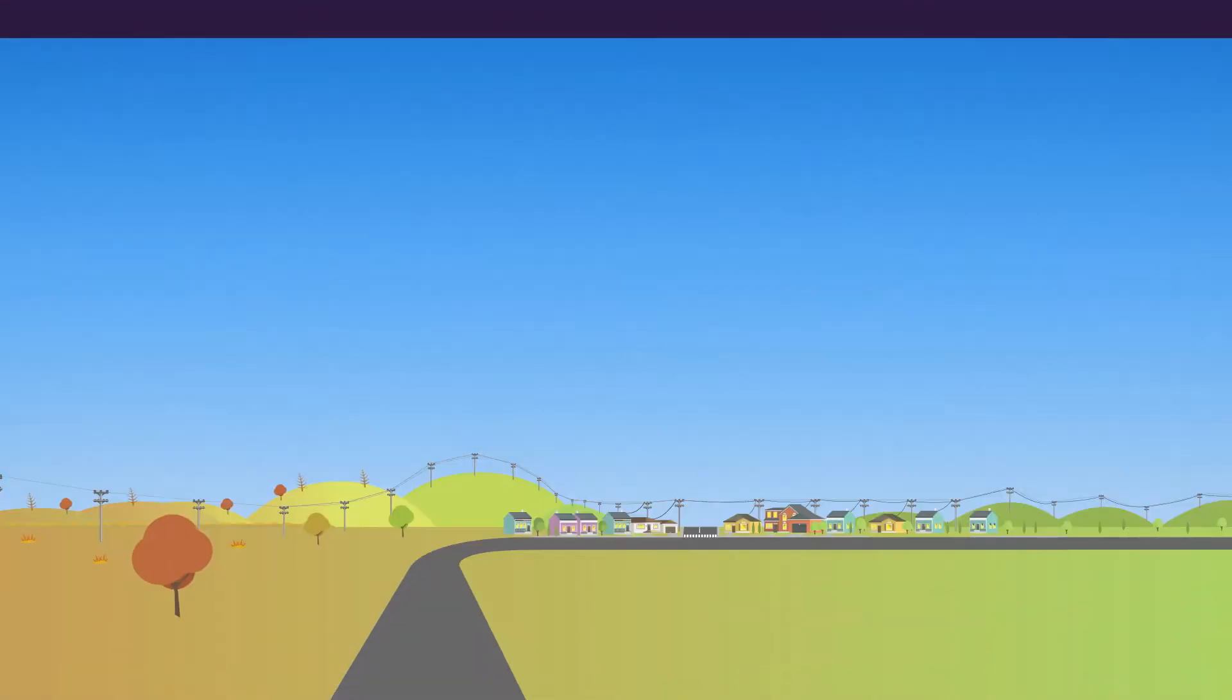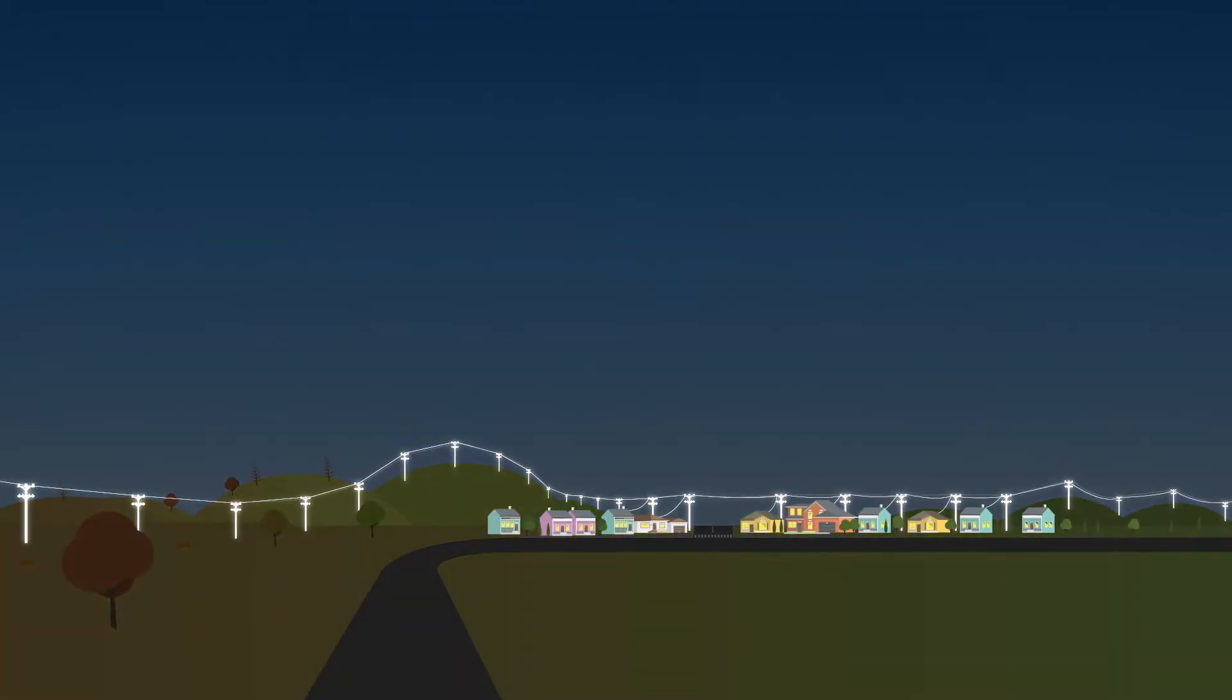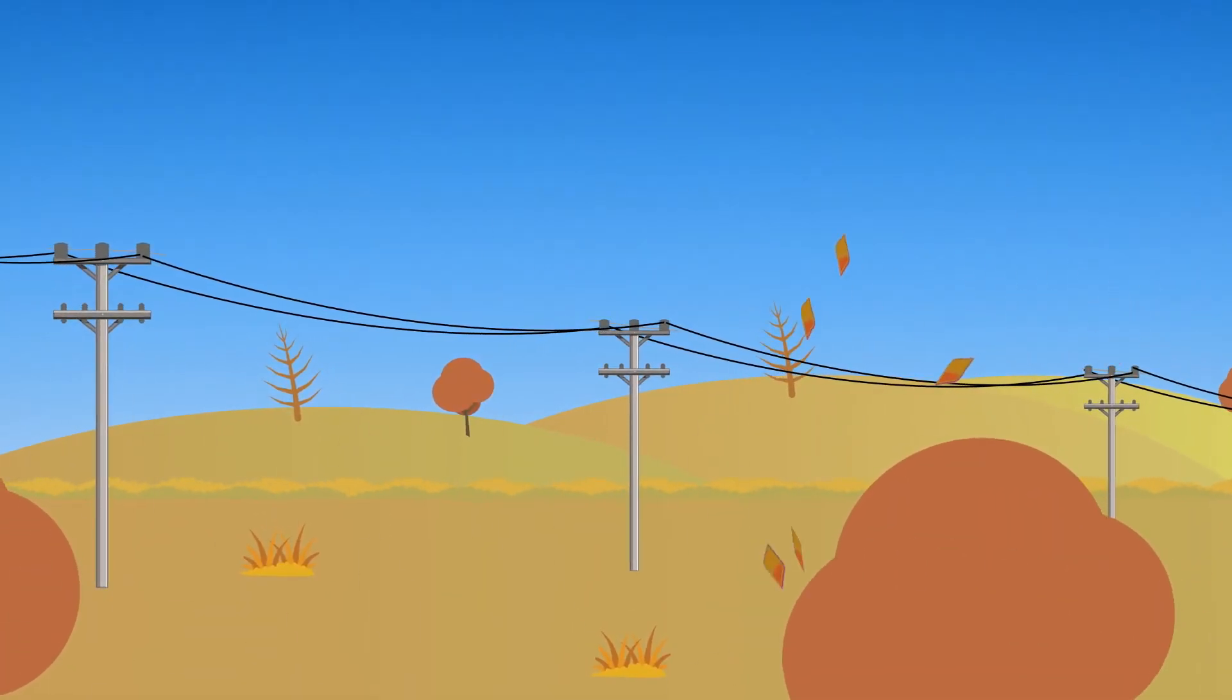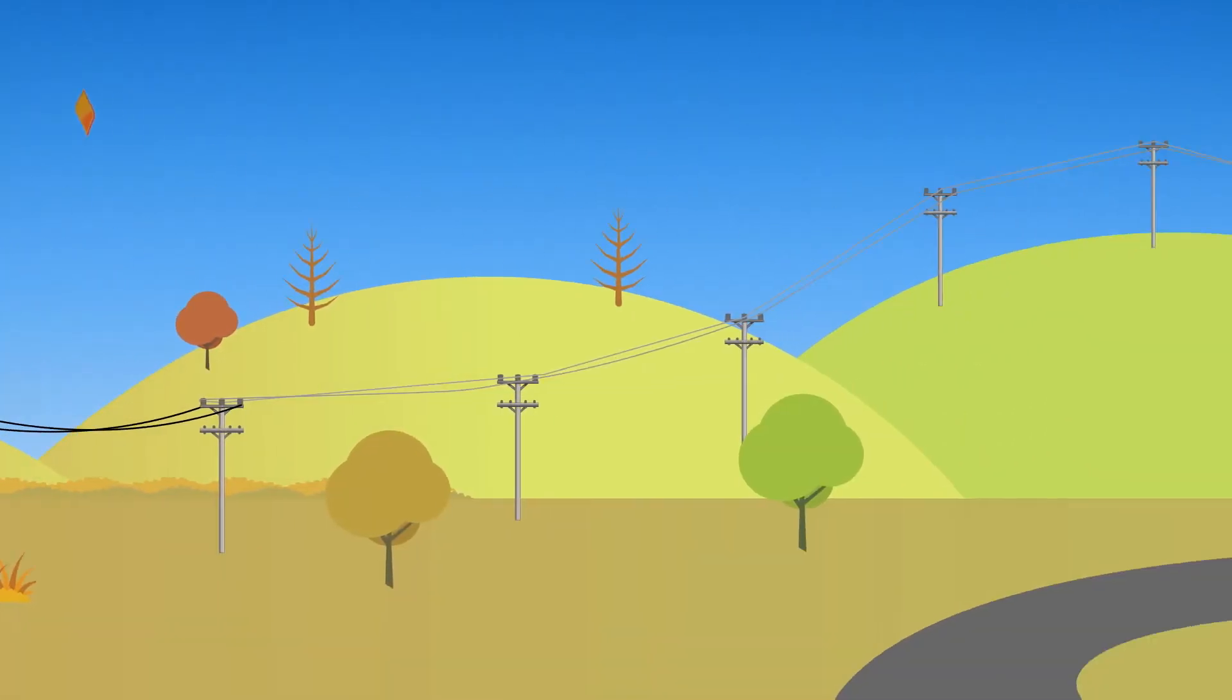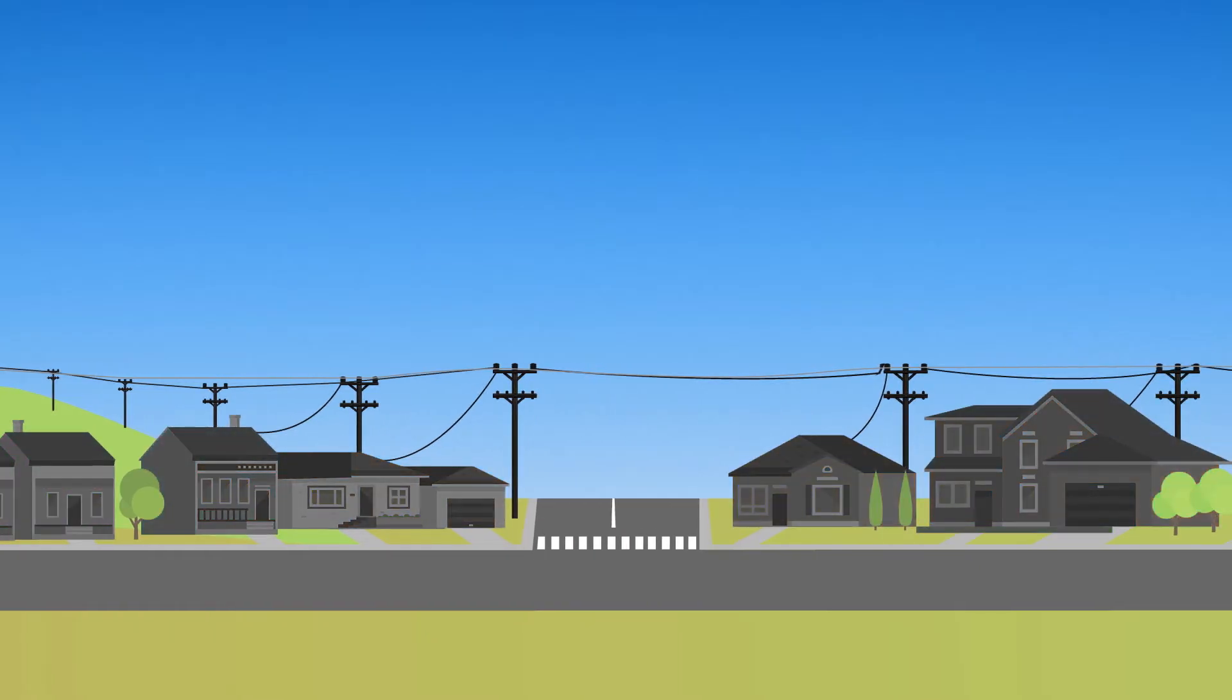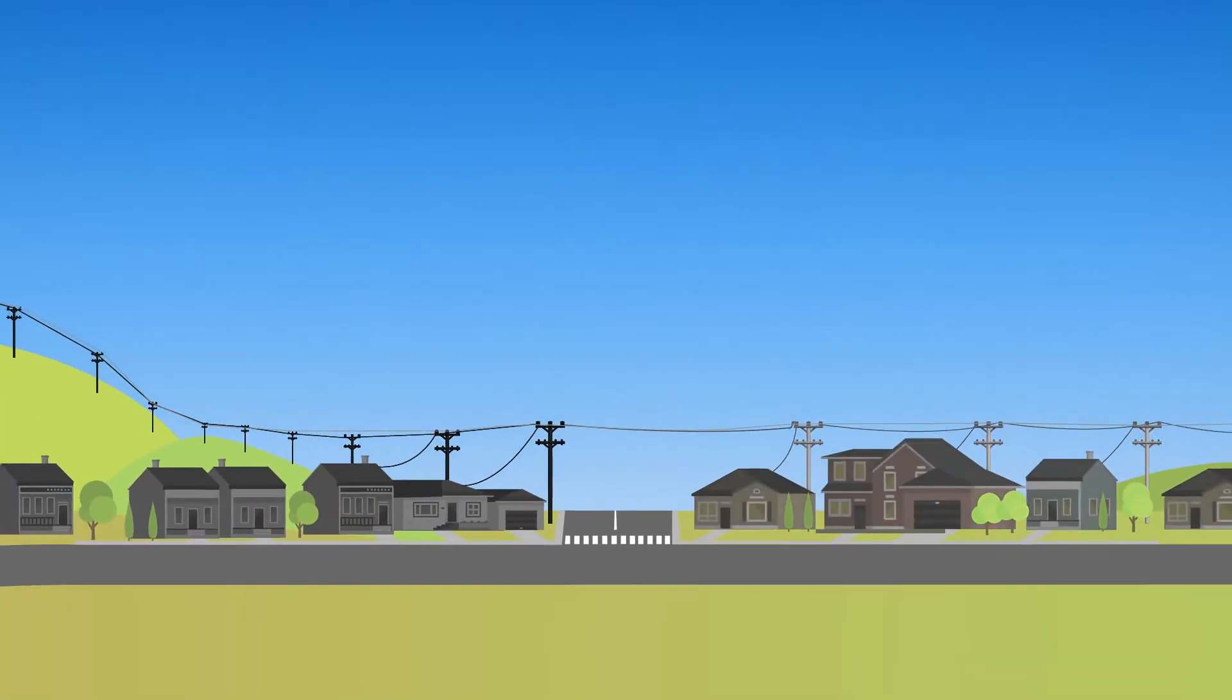When we look for fire risk, we look at the entire length of the circuit. There might be a fire risk at one end of the circuit, even though customers at the other end are in less windy areas. If we can, we shut off only parts of a circuit.